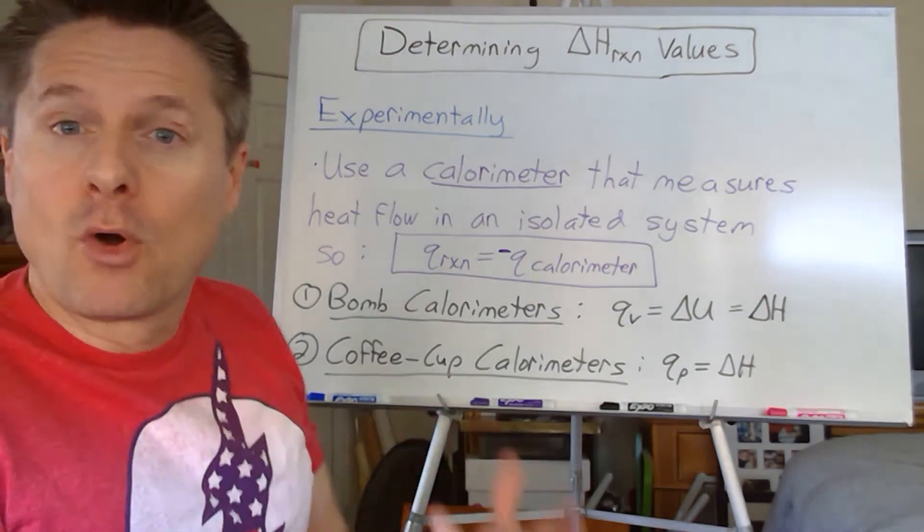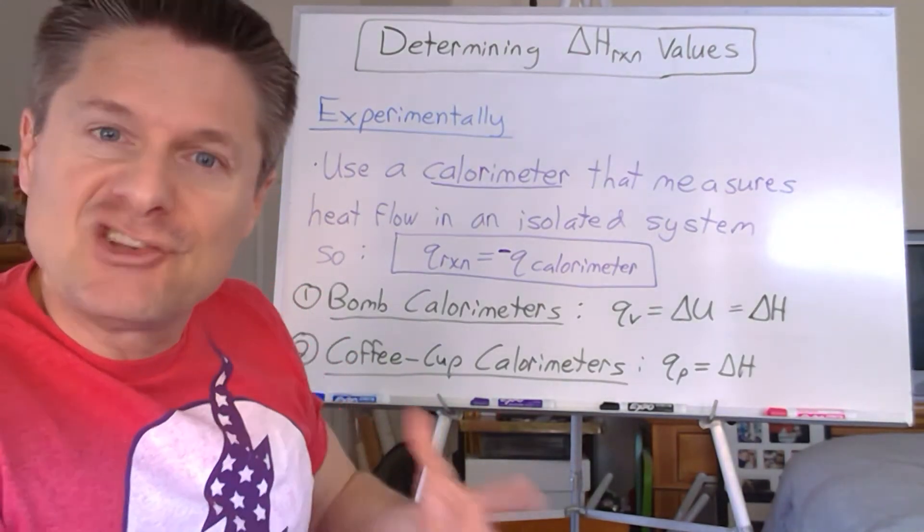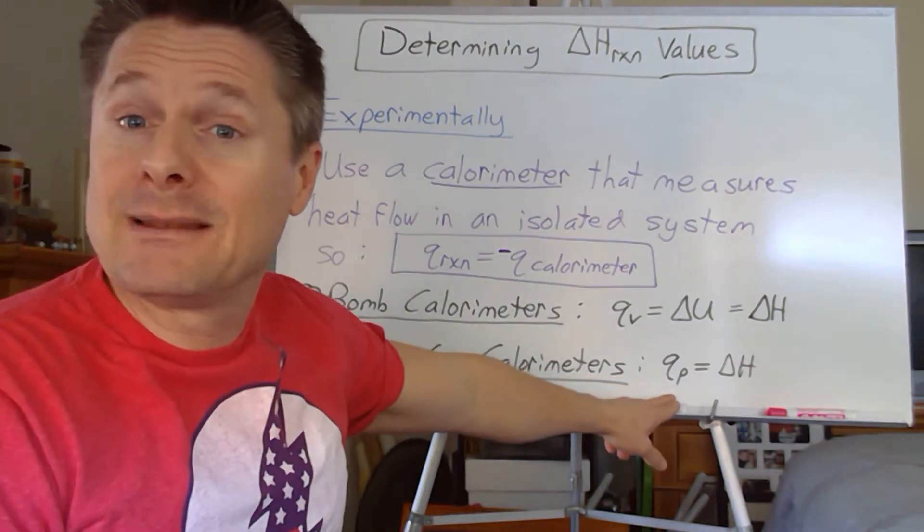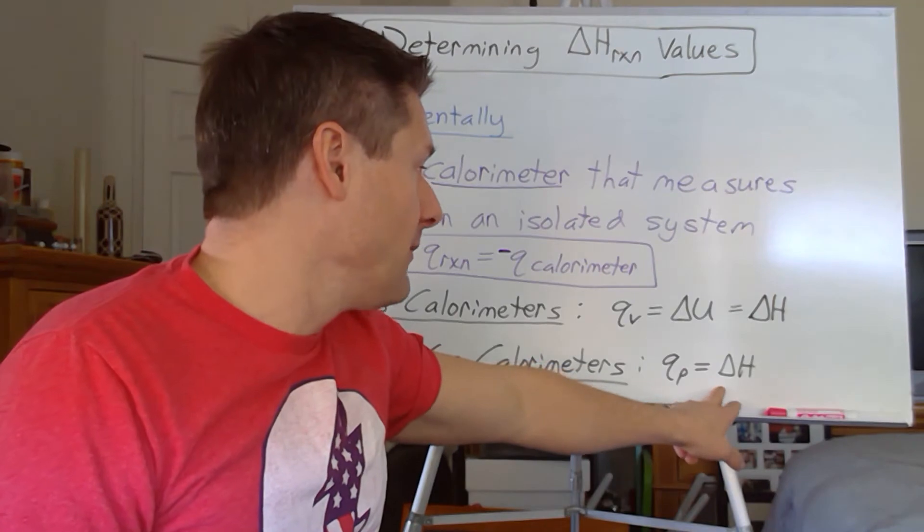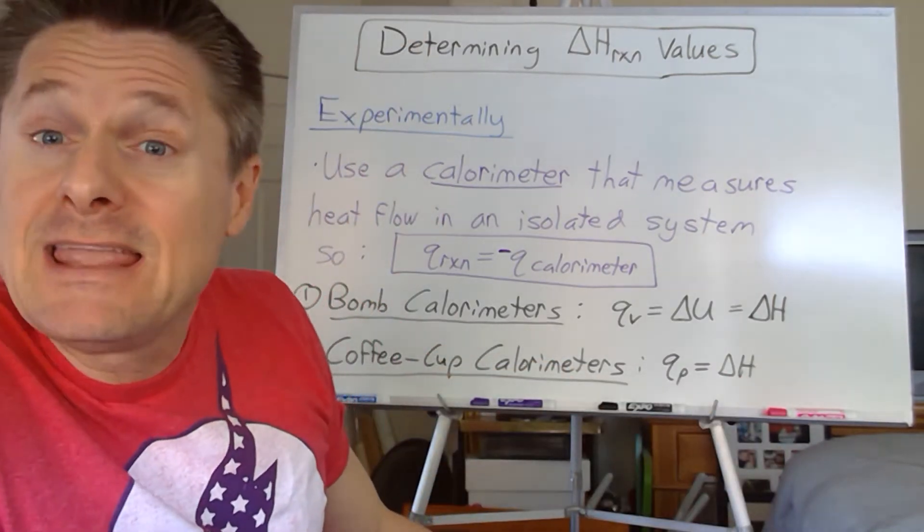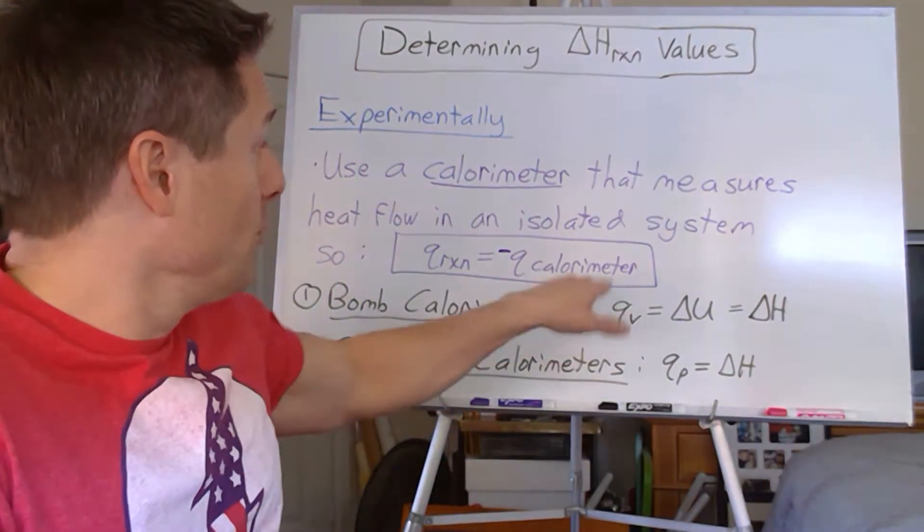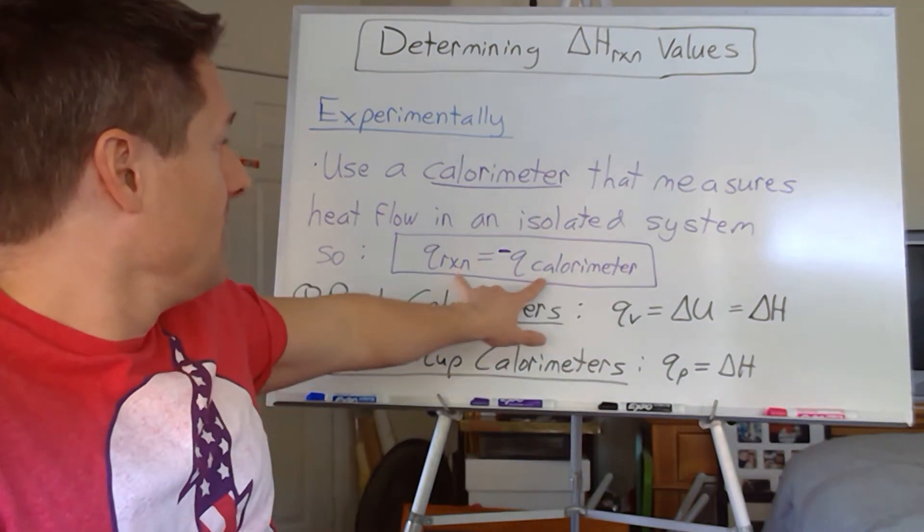For coffee cup calorimeters, which is more what you'll do at an undergraduate level - the cheaper Styrofoam versions - we're at constant pressure in that scenario, and so the heat flow we can use to measure the heat of reaction is the heat flow at constant pressure.